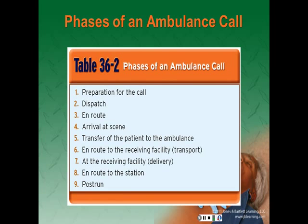The phases of an ambulance call. An ambulance call has nine phases: preparation, dispatch, en route, arrival at scene, transfer of patient to the ambulance, en route to the receiving facility or transport, at the receiving facility or delivery, en route to the station, and the post-run phase.